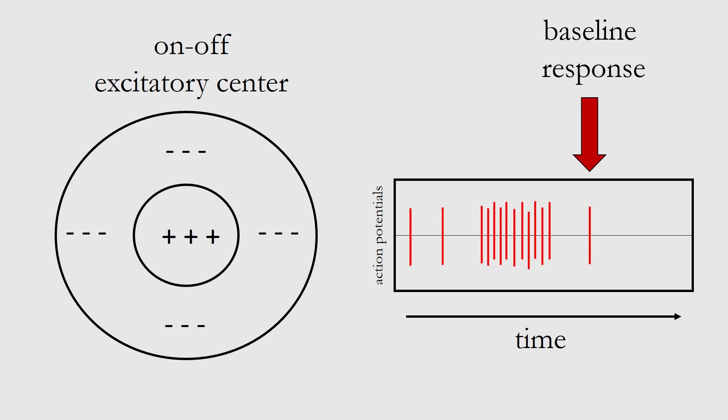But now let's assume that we throw some light over on a little bit of the surrounding area of this. You can see that there's no action potentials now. This cell has stopped firing because it's letting us know hey, there's light in the surrounding area of this cell.